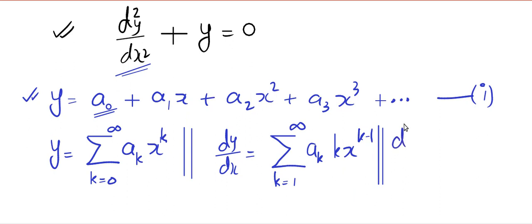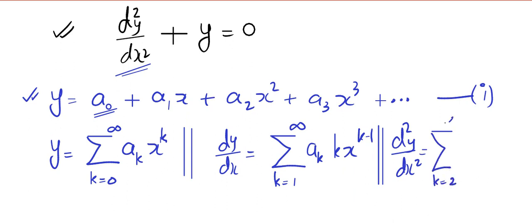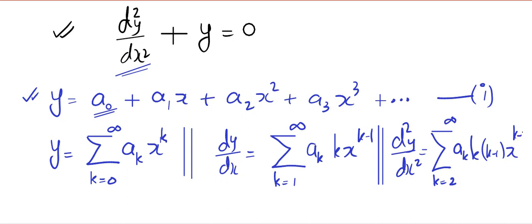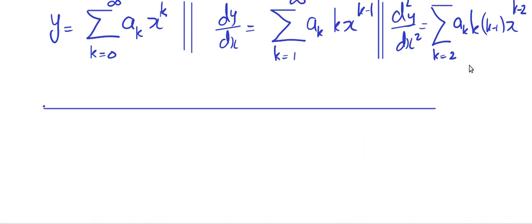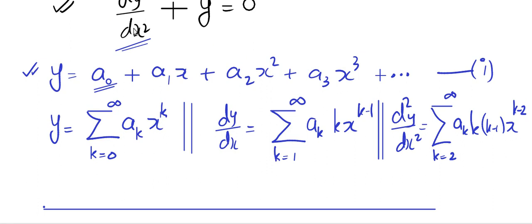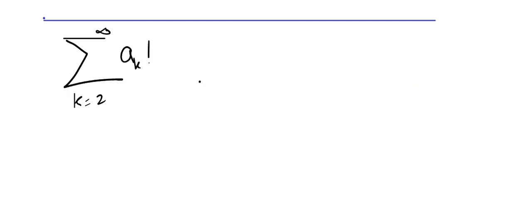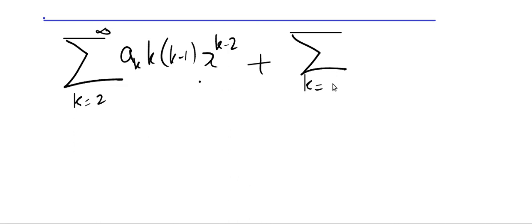Now d square y by dx square will be — can you guess? It is k equal to 2 to infinity, ak times k times (k minus 1) times x to the power k minus 2. That is it. As usual, the solution will satisfy the equation. The equation is the second order derivative plus y equal to 0. So plugging in, I get sigma k equal to 2 to infinity ak k(k minus 1) x to the power k minus 2, plus sigma k equal to 0 to infinity ak x to the power k, equal to 0.